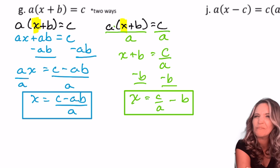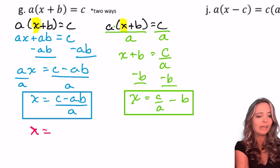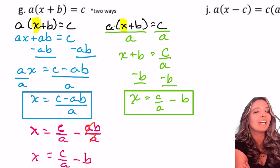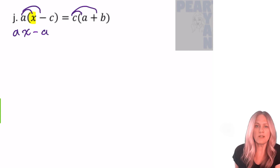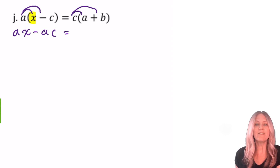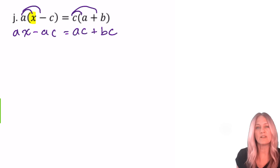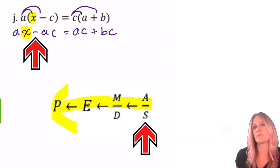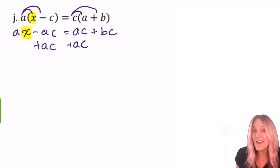Looking at those two answers, they don't look the same — but are they equivalent? c minus ab all divided by a: I could split the fraction and get c over a plus ab over a. The a's divide out, leaving c over a minus b. Yes, they're equivalent! This next one also has two approaches. Let's distribute on both sides. On the right side, when we distribute the c, we most often write things alphabetically — so ac not ca, using the commutative property of multiplication. Now let's identify x and work backwards through PEMDAS to get x by itself: add ac to both sides.